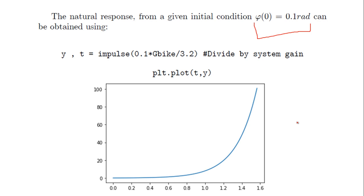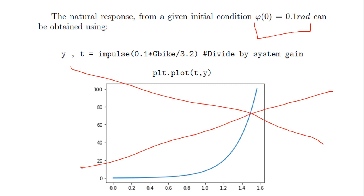If the driver is there, of course the driver will fall down too. This is something we don't want — the bicycle cannot operate in this way. So the driver has to apply some force.